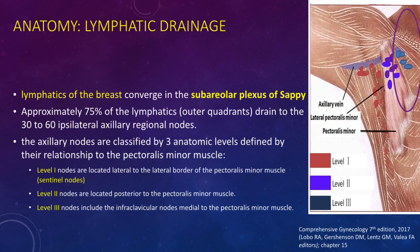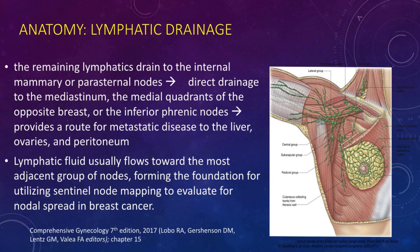Lymphatic channels drain lymph fluid and potentially circulating tumor cells, which primarily accumulate in the first nodes of the chain — known as the sentinel nodes. A traditional axillary lymph node dissection usually removes nodes in levels 1 and 2, and for women with invasive breast cancer, this procedure accompanies a mastectomy. The remaining lymphatics drain to the internal mammary or parasternal nodes, with direct drainage to the mediastinum, the medial quadrants of the opposite breast, or the inferior phrenic nodes — providing a route for metastatic disease to the liver, ovaries, and peritoneum. Lymphatic fluid usually flows toward the most adjacent group of nodes, forming the foundation for utilizing sentinel node mapping to evaluate for nodal spread in breast cancer.